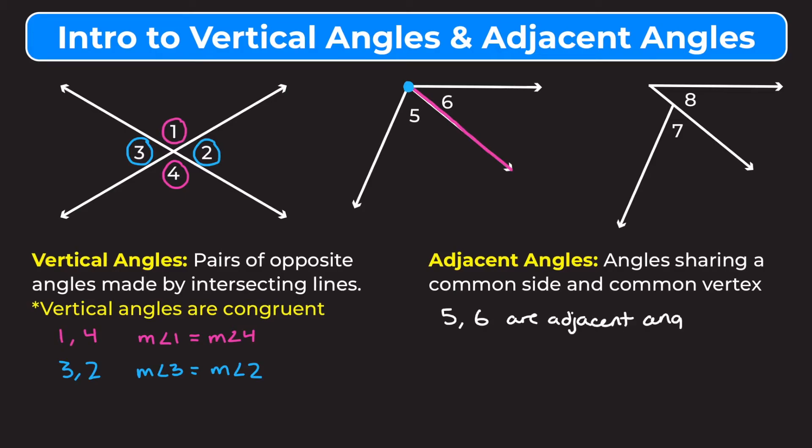There's no rule about adjacent angles being congruent. Sometimes they're going to add up to 90 degrees, sometimes 180 degrees, sometimes just some random degree measure — but they're not necessarily congruent. I'll show you what I mean when we go over some problems in the next couple of slides.